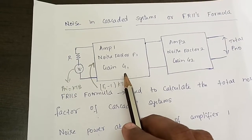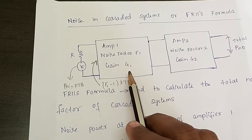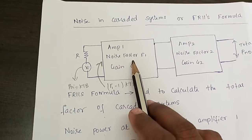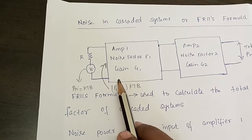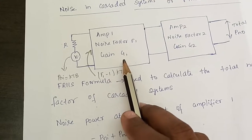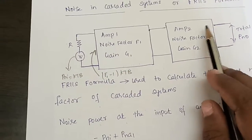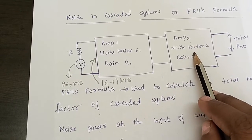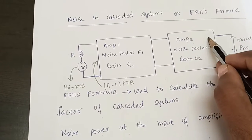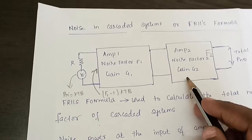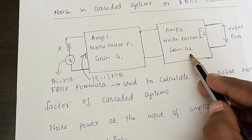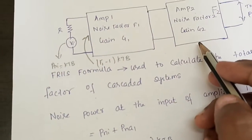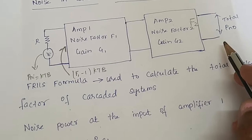Let us consider two amplifiers connected in cascade. This is Amplifier 1; the noise factor of this individual amplifier is F1 and the power gain is G1. Likewise, we have Amplifier 2 with noise factor F2 and power gain G2. The total noise power of this cascaded system we will represent as Pn0.